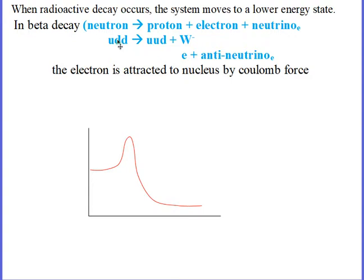What happens is a down quark transitions into an up quark. So instead of having a neutron in the nucleus, you now have an extra proton in the nucleus, but you also get this negative W boson, which keeps the charge conserved. The W boson is not stable — that's a gauge boson — and it decays into an electron. And there's where that electron comes from in the nucleus.